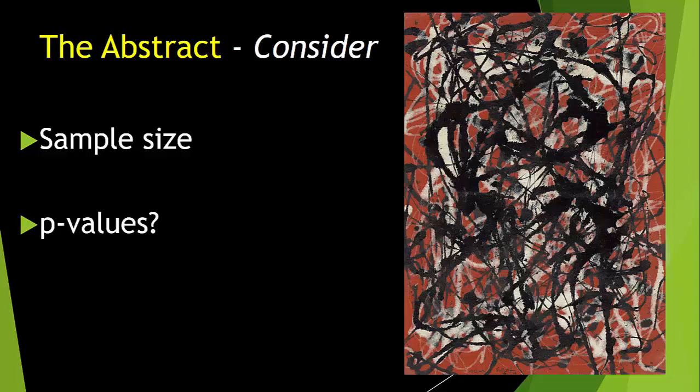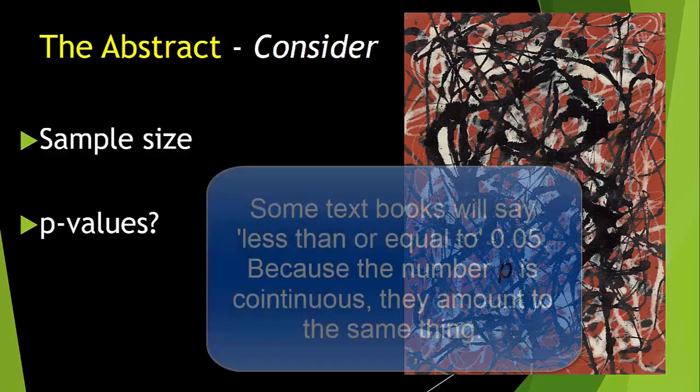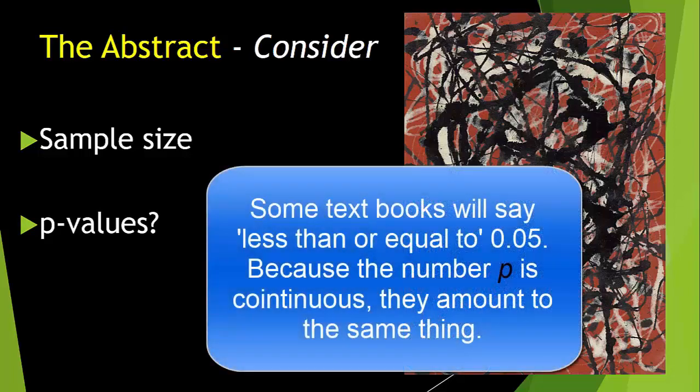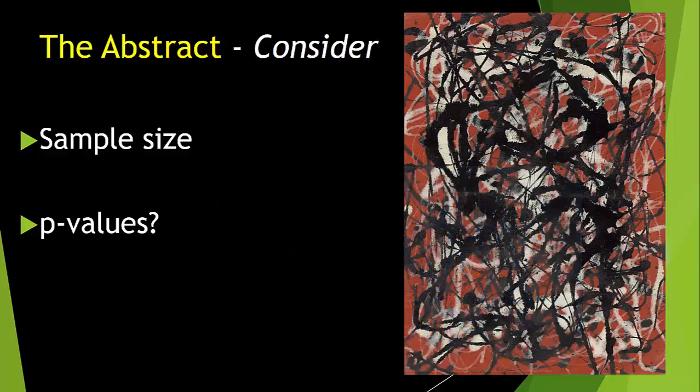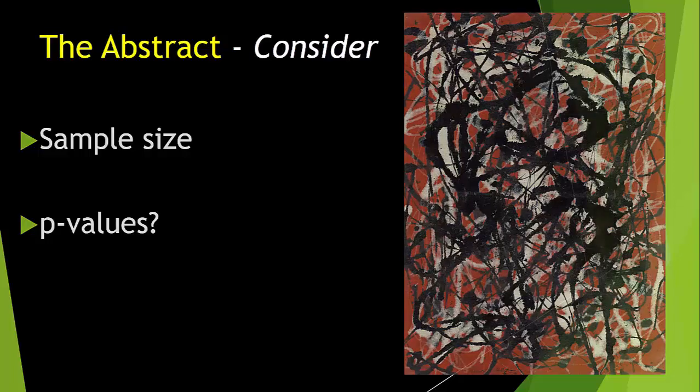Next, consider what are the key p-values. Are there any less than 0.05? I bet there are, otherwise it is unlikely publication would have been granted. But how much less? The smaller the p-value, the stronger is the case for statistical significance. The following guidelines can be useful and are taken from the Open University Handbook in Mathematics and Statistics from 2009.